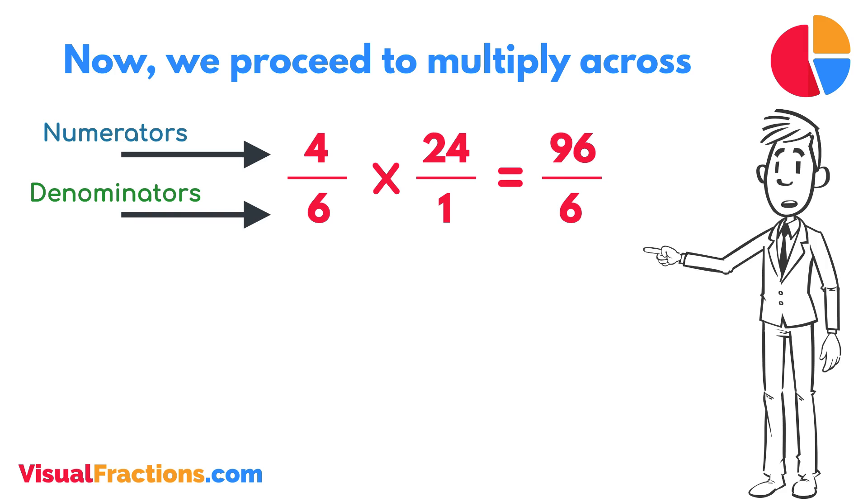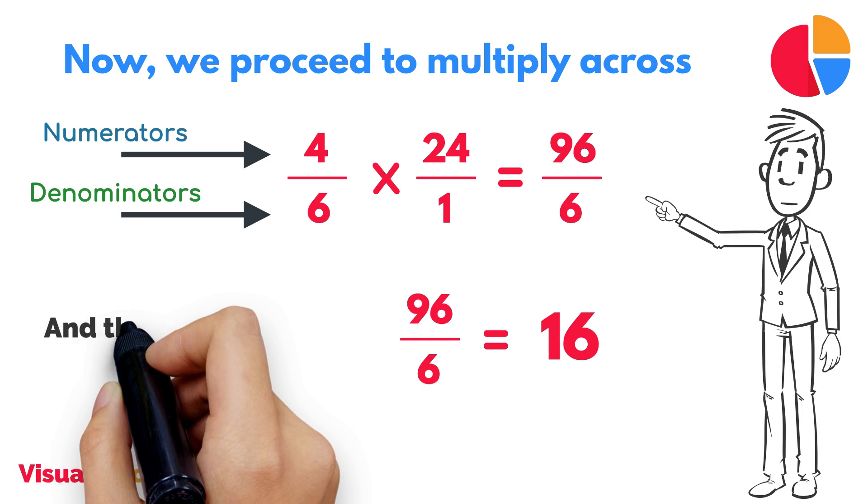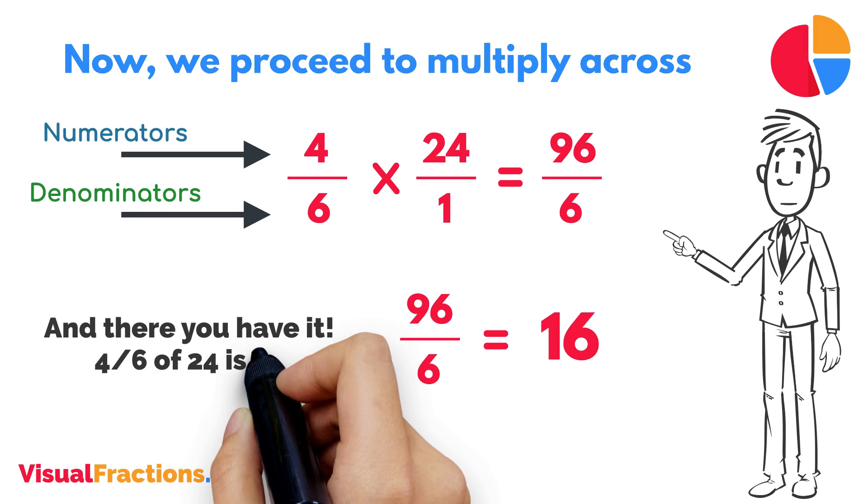To find the final answer, divide the numerator by the denominator. So, 96 divided by 6 equals 16. And there you have it. 4 sixths of 24 is 16.